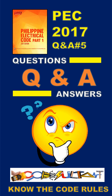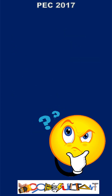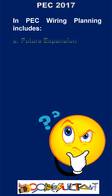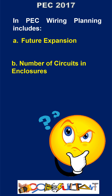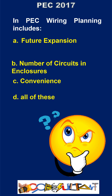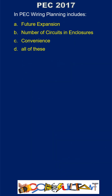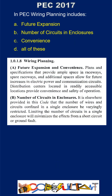PEC questions and answers number 5: In PEC wiring planning includes (a) future expansion, (b) number of circuits in enclosures, (c) convenience, (d) all of these. The answer to this question is in Section 1.0.1.8, Wiring Planning — subsection 1.0.1.8(a) for future expansion and convenience, and subsection 1.0.1.8(b) for number of circuits in enclosures. Therefore, the correct answer is letter D, all of these.